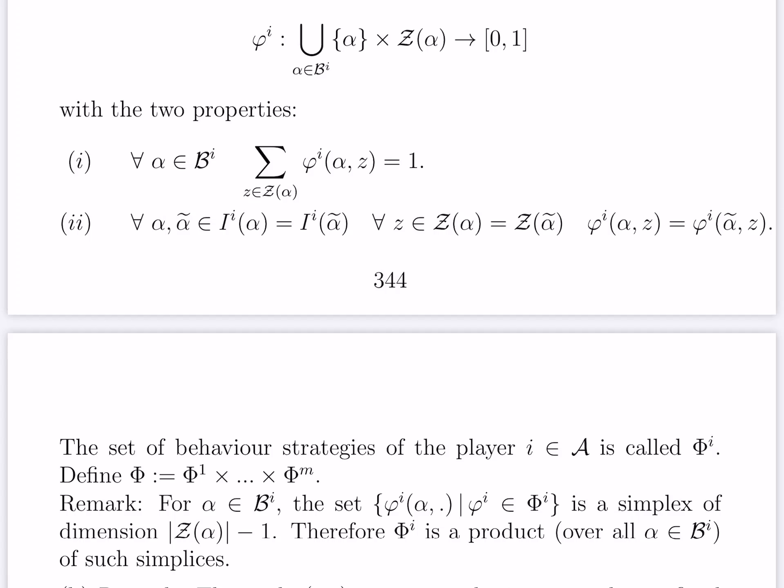For a fixed play alpha, the set of probability distributions over the set of alpha is a simplex whose dimension is the number of z of alpha minus 1. So for any alpha we get a simplex, and Phi i is just the product of all such simplices. So it is itself a polytope.